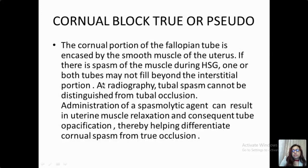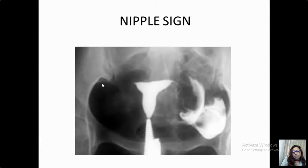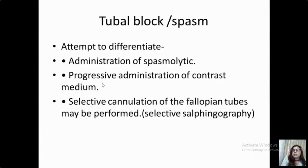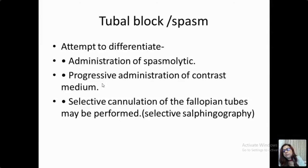Cornual block, which commonly occurs, should be evaluated whether it is true or pseudo. The cornual portion of the tube is encased by the smooth muscle of the uterus, so if there is any spasm during HSG, one or more tubes may not fill with contrast — giving a pseudo block. To distinguish pseudo from true block, we administer a spasmolytic as part of pre-medication, or we can continue administration of contrast which sometimes leads to opening of the spasm. We also have selective fallopian tube cannulation — selective salpingography — which helps differentiate tubal spasm from true tubal block.